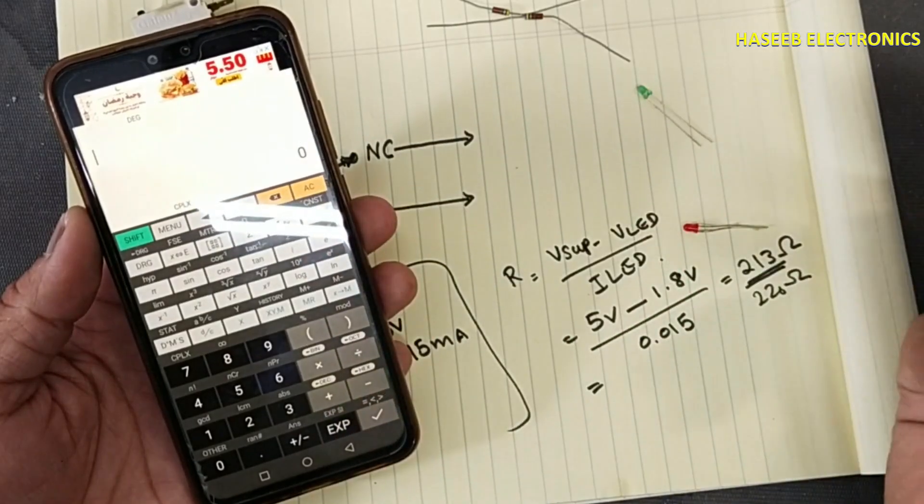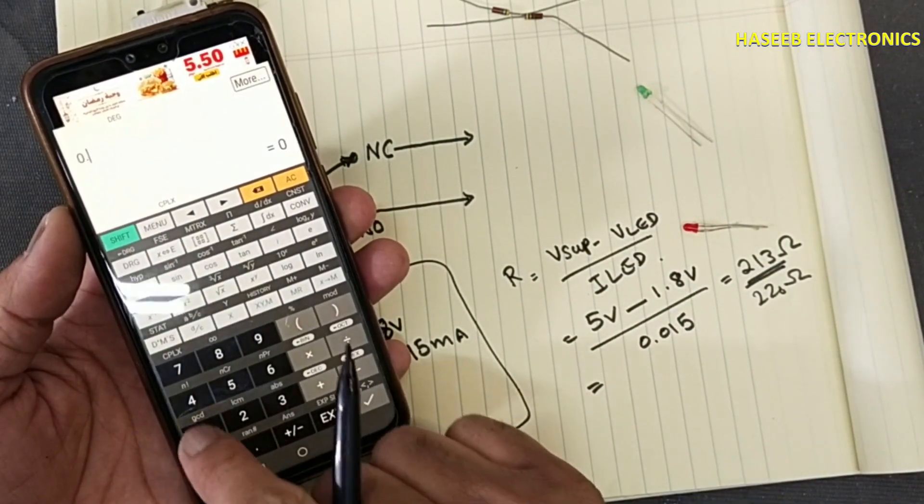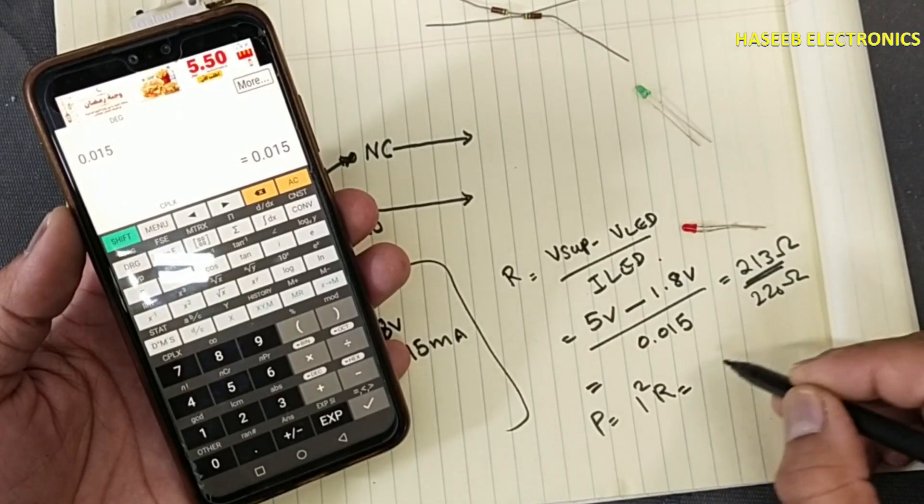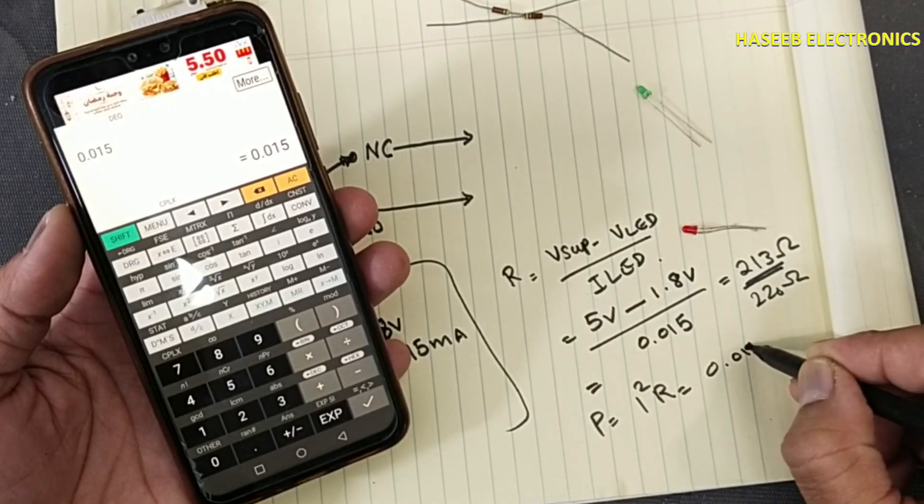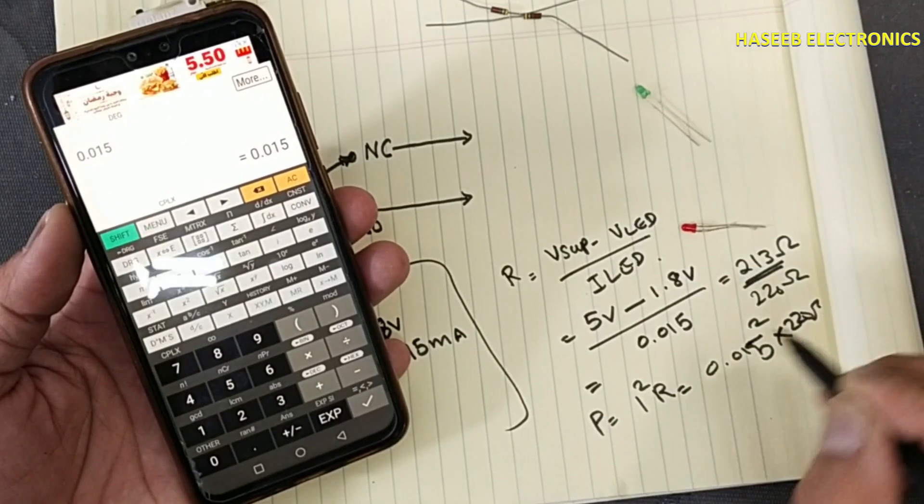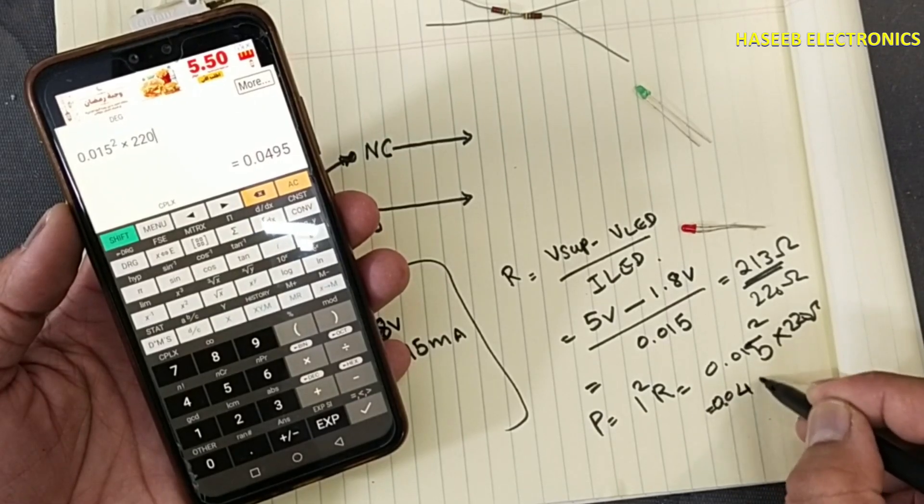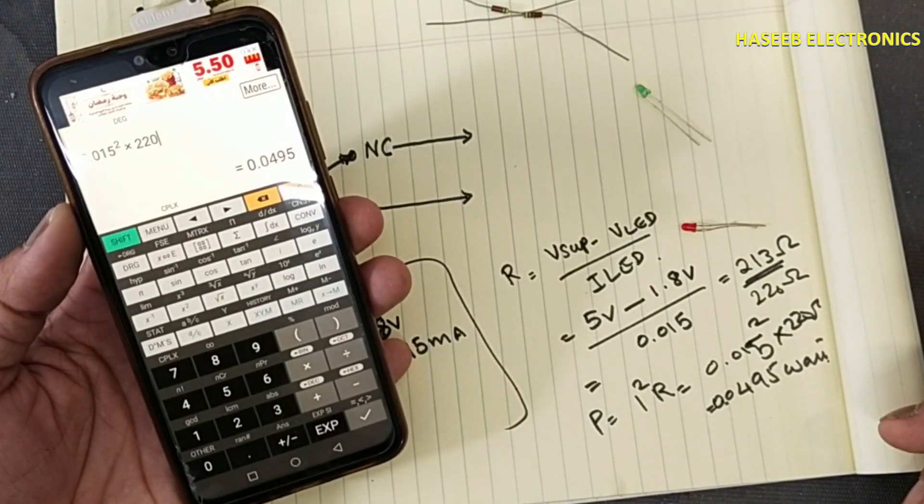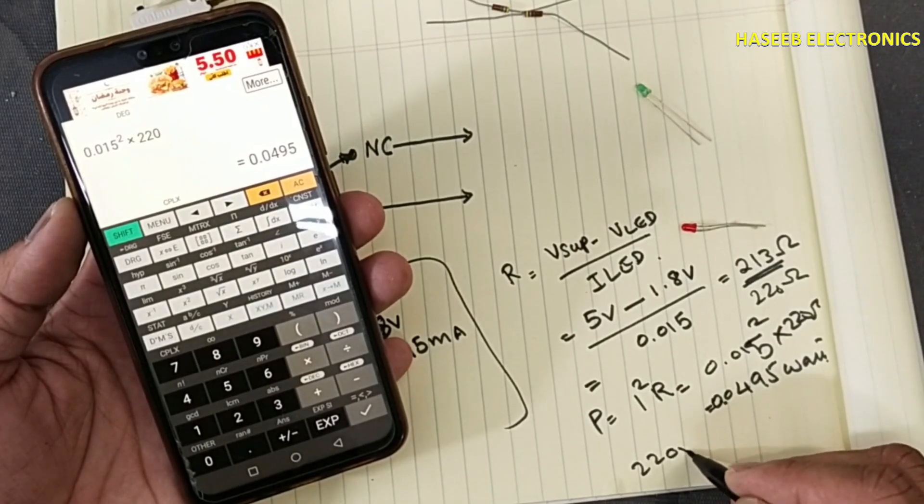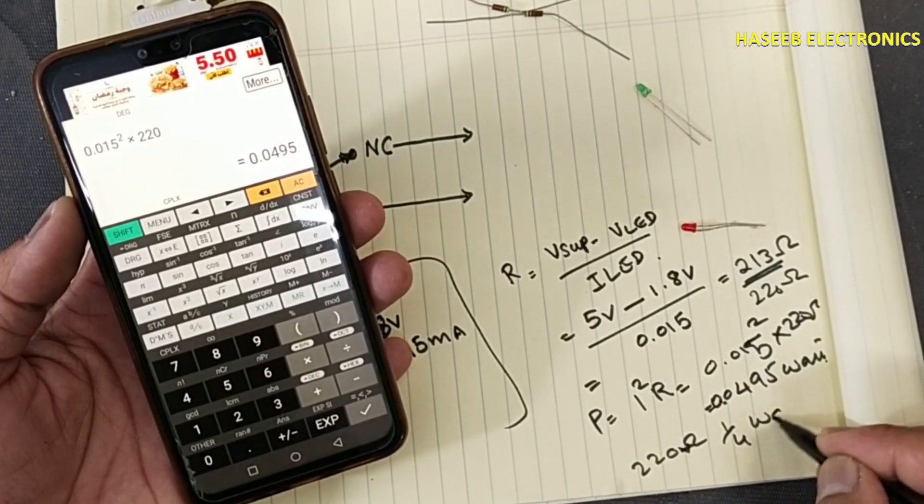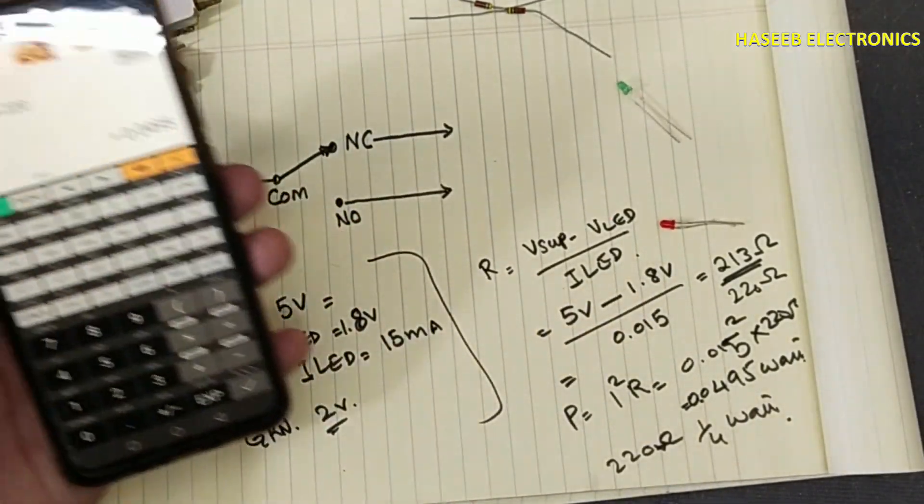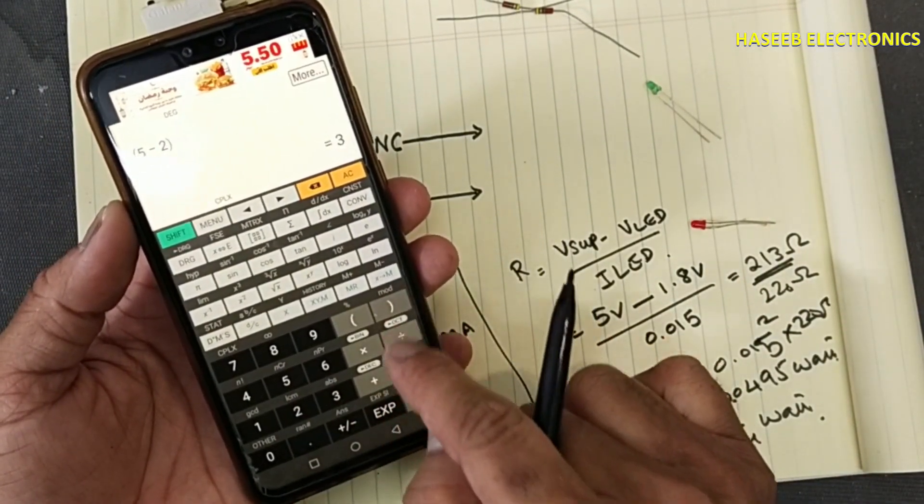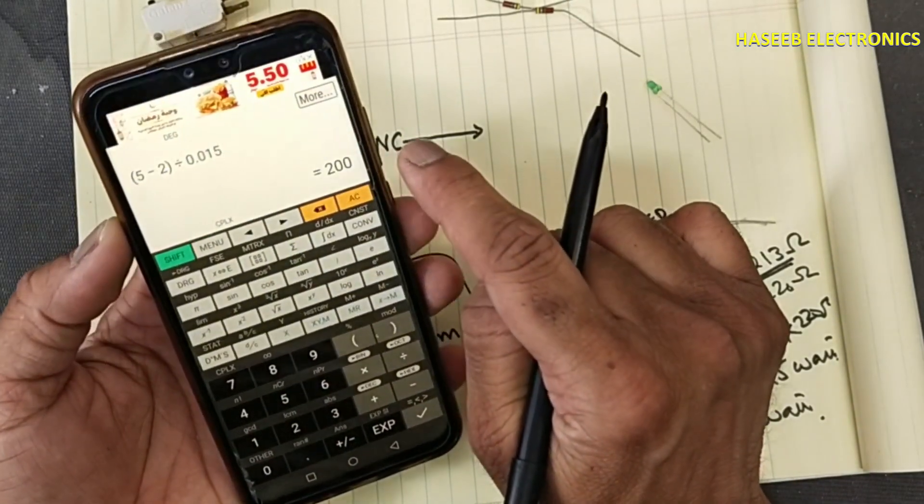220 ohm. Now what will be the power rating we are using? 0.015, 15 milliampere. P is equal to I squared R. 0.015 square, 220 ohm, 0.0495 watt. So we will use 1/4 watt or 1/8 watt, 220 ohm, 1/4 watt. If you will use 2 volt drop, 5 minus 2 divided by 0.015, it will be 200 ohms, so we will use same 220 ohm resistance.